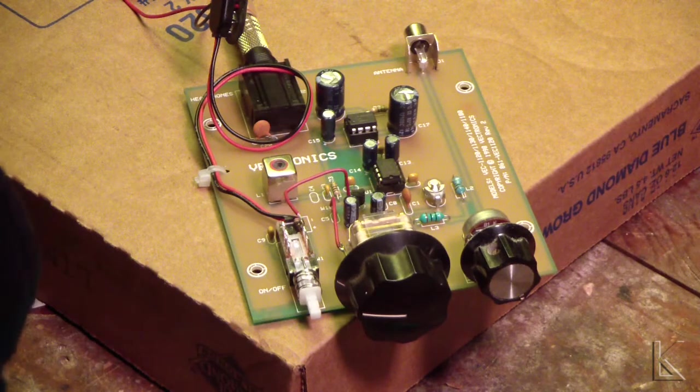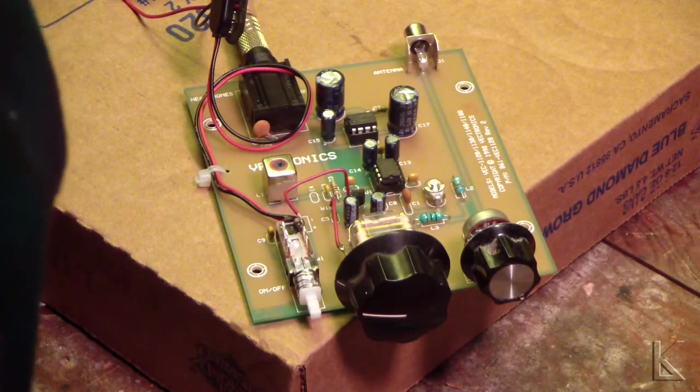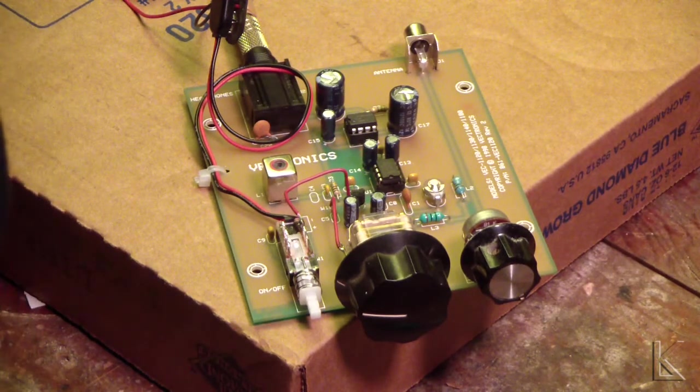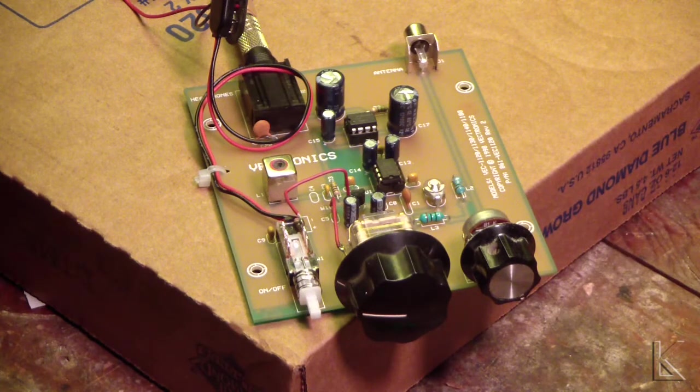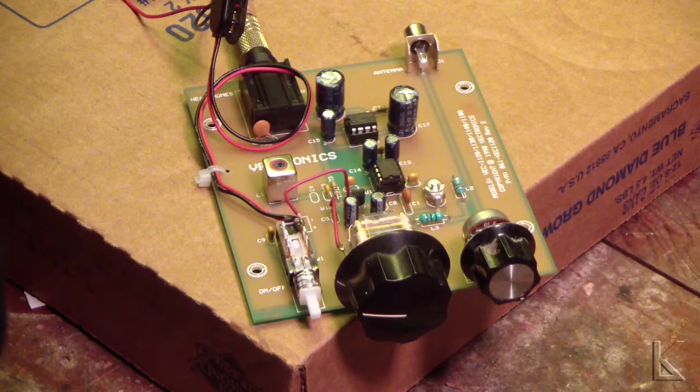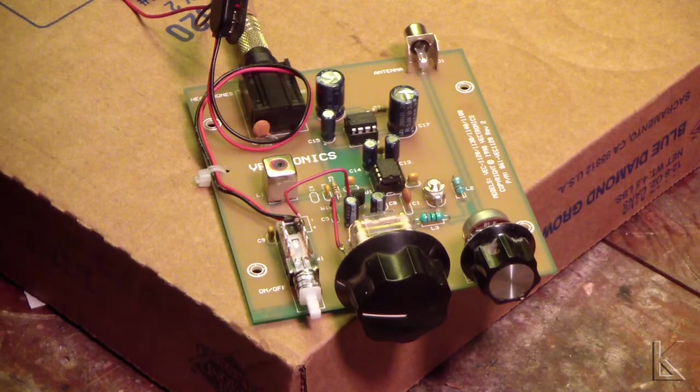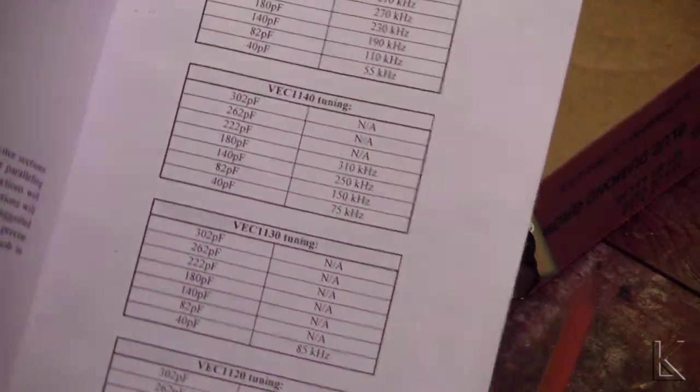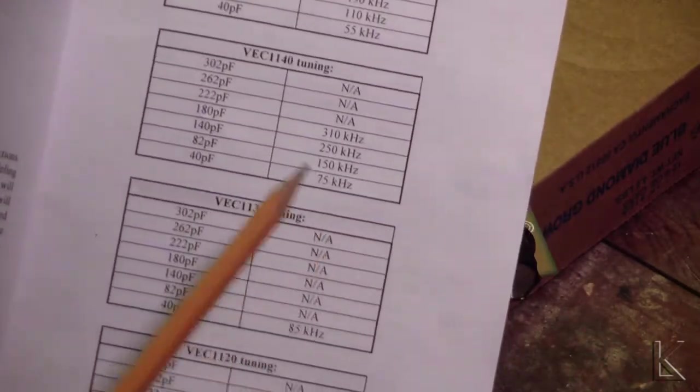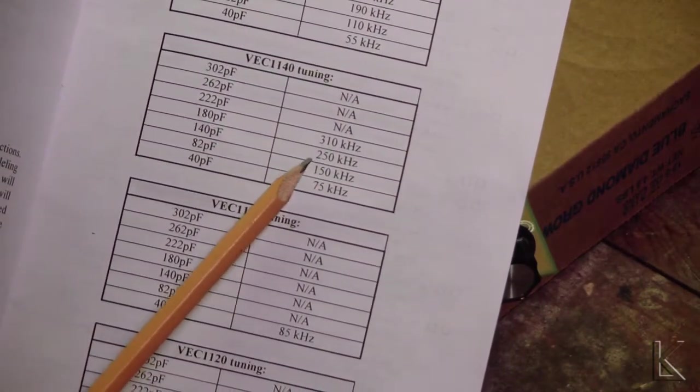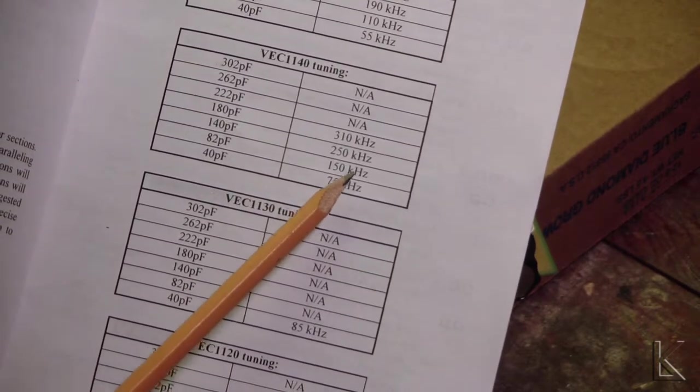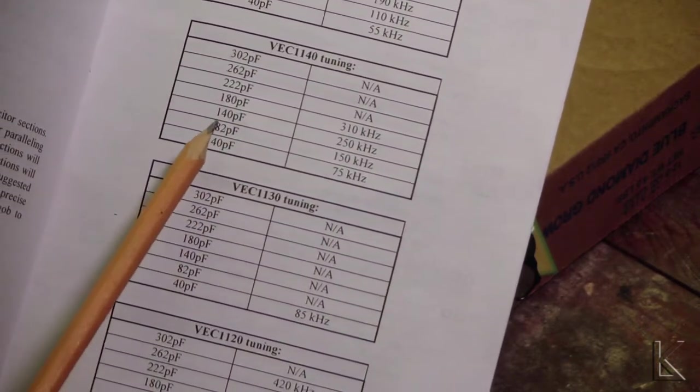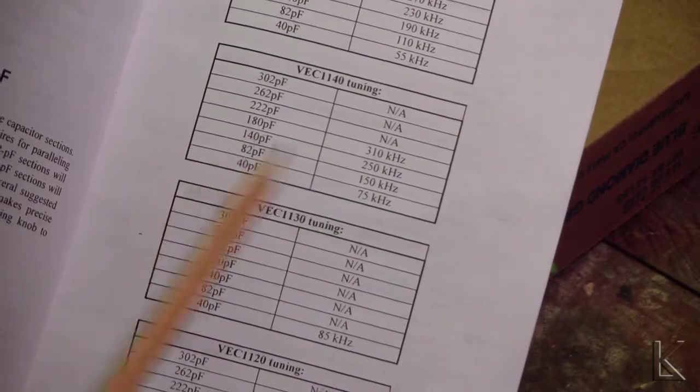And for example, on the 40 meter kit, you can have it tuned from as little as 75 kilohertz range to 310 kilohertz range. So you could do the entire 40 meter band or part of the 40 meter band. 150 kilohertz is what I'm using because I'm going to go from 7 to 7.15 megahertz. So I use an 82 picofarad portion of the capacitor only.